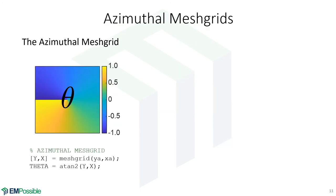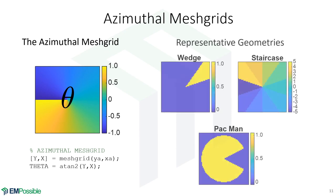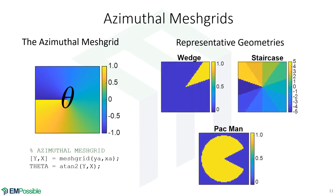The last one I'll show is an azimuthal mesh grid. Here we're calculating the inverse tangent of y and x, so essentially it's the angle of the linear mesh grid x and y. Why on earth would we want to do that? Perhaps we'd like to create wedges or staircase patterns or even a Pac-Man. This is actually a combination of a radial grid and an azimuthal grid. We use the radial grid to make the circle, azimuthal grid to make the wedge which is the mouth of the Pac-Man, and then we just subtracted that wedge from the Pac-Man.